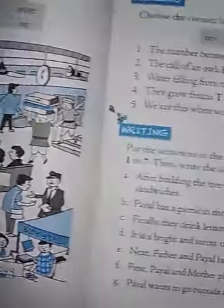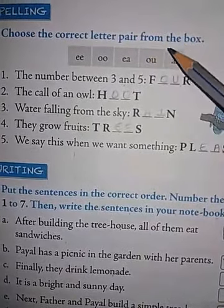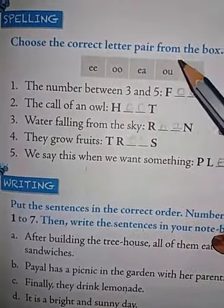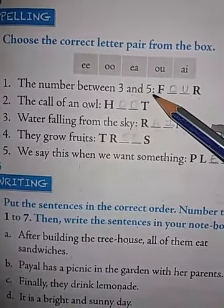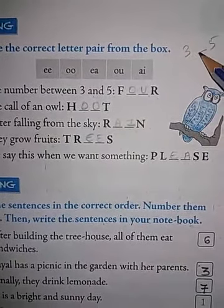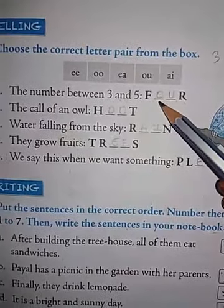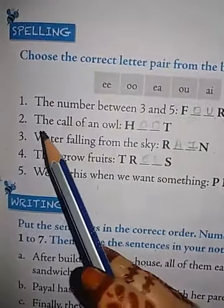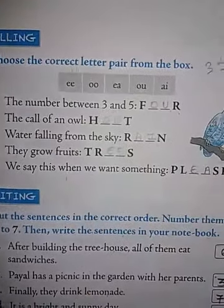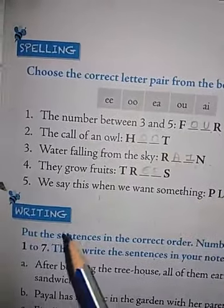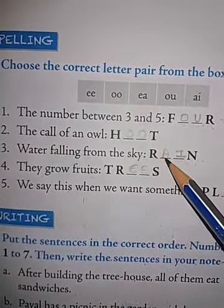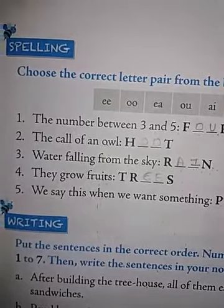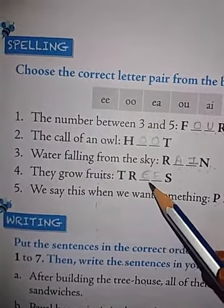Next, spelling bit. Choose the correct letter pair from the box: double E, double O, E-A, O-U, or A-I. First one, the number between three and five. Say the spelling of four. F-O-U-R, four. Second, the call of an owl. Owl says hoot. H-O-O-T, hoot. Third, water falling from the sky is called rain. R-A-I-N, rain. Fourth, they grow fruits. Trees is the answer. T-R-E-E-S, trees.